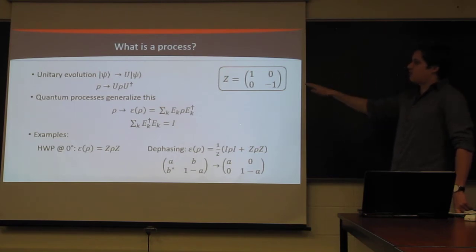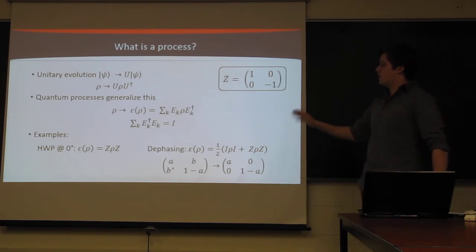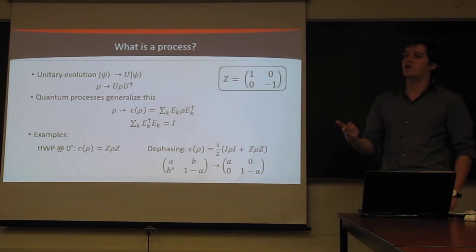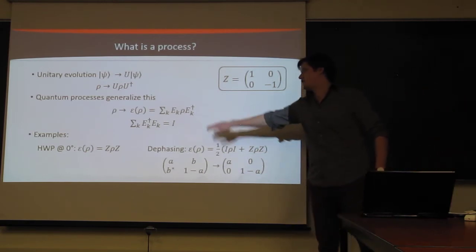So for processes, we're all familiar in quantum mechanics that states undergo unitary evolution. That some process will act on a quantum state, and it just corresponds to a unitary matrix being multiplied by the state. It could be time-varying, it could be not. It doesn't really matter in this case. But in quantum information, we can generalize this to basically an incoherent sum of these unitary processes. So that would be this right here.